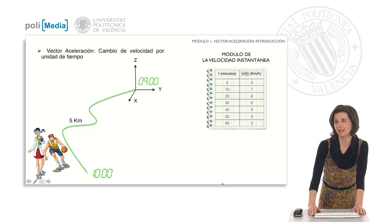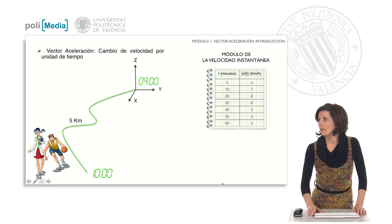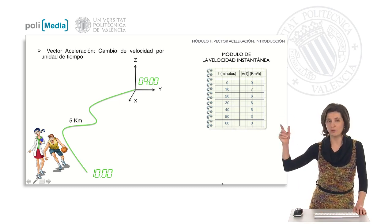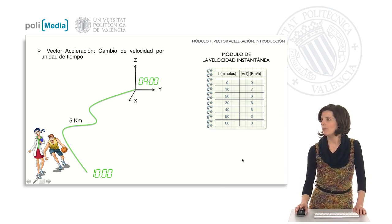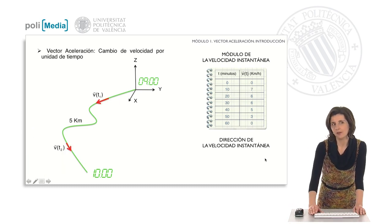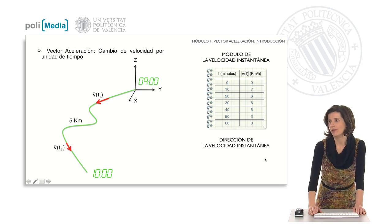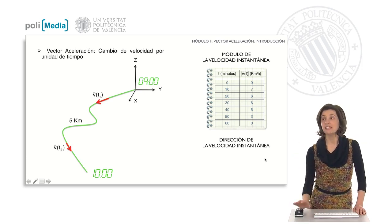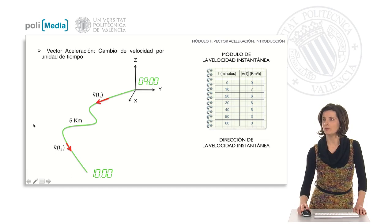Recall that in yesterday's class we saw the modulus of the instantaneous velocity during Jay and Amanda's walk to the basketball hall. We can see how the modulus of the velocity is indeed changing. But also the direction and sense of the velocity vector changed. In the image we see the velocity vector at two different instants, and indeed we see how the direction changes.